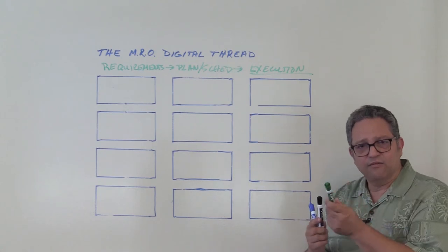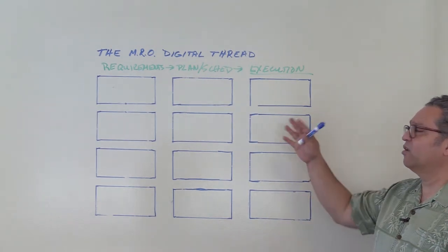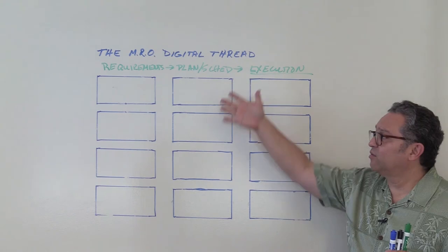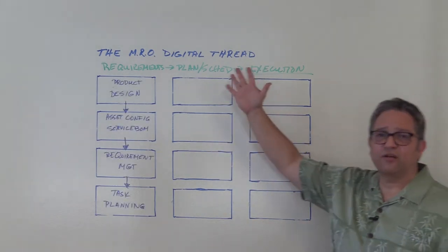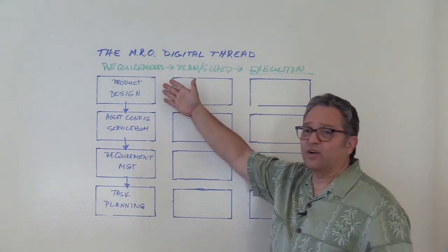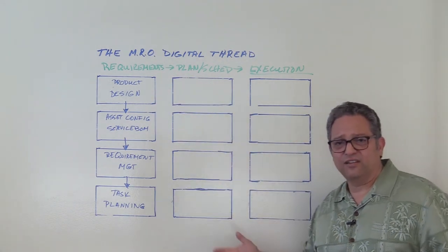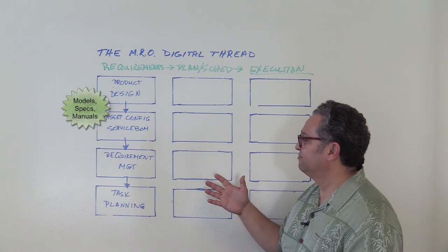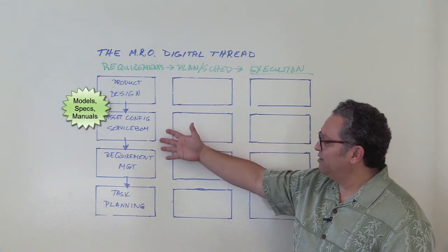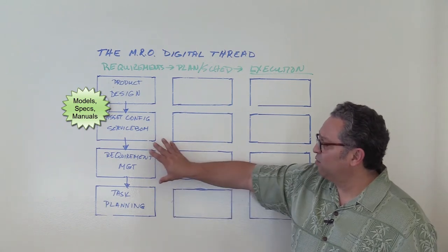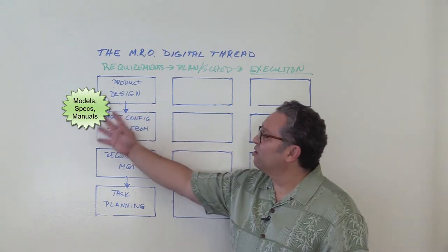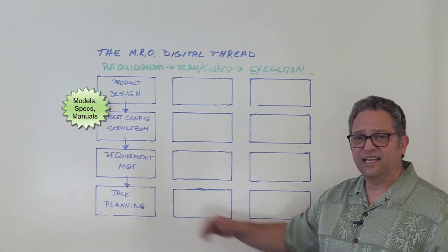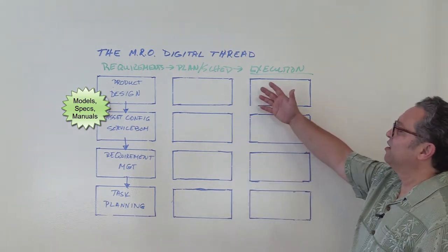As we go along, I'm going to highlight solutions from PLM, iBaseT, and ERP that form this digital thread and show how we thread them together. The first stage is requirements management, where we start with product design and move to the asset configuration, service BOM, models, and maintenance manuals — all forming our basis for maintenance requirements.